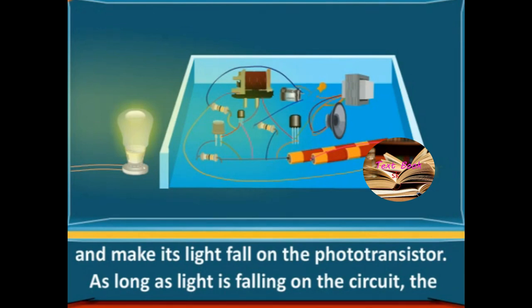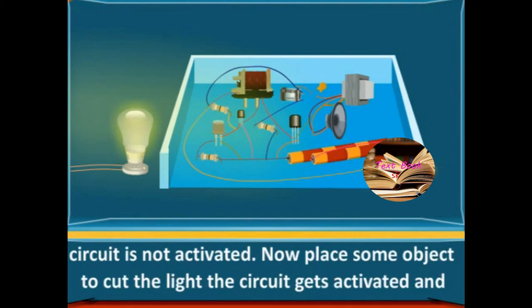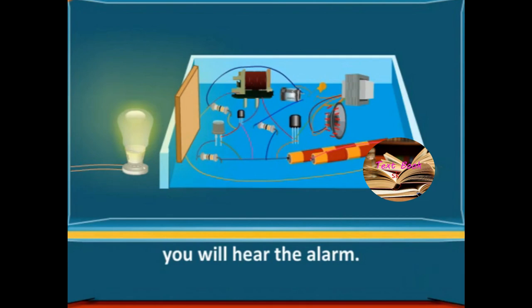As long as light is falling on the circuit, the circuit is not activated. Now place some object to cut the light. The circuit gets activated and you will hear the alarm.